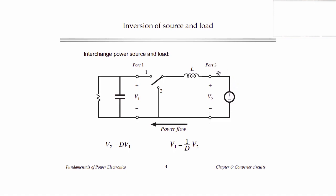Here I've connected the power source as V2 and the load as V1, but the relationship between V1 and V2 is the same. If you apply volt-second balance to this inductor, you find the same relationship: V2 is still D times V1. But now V2 is the power source and V1 is the load. Solving for V1, we find V1 equals V2 divided by the duty cycle. Since the duty cycle is less than one, the load voltage V1 is greater than the source voltage V2 — this performs the function of boosting the voltage. In fact, this looks like a boost converter, just drawn from right to left instead of left to right.